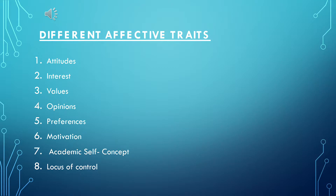These are the different affective traits and their corresponding descriptions. Number one is attitudes — it is a predisposition to be more likely to behave in a particular way or to be affected by a particular condition. It is to respond favorably or unfavorably to specified situations, concepts, objects, institutions, or persons.